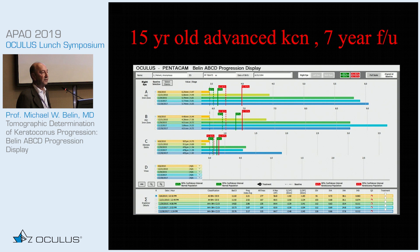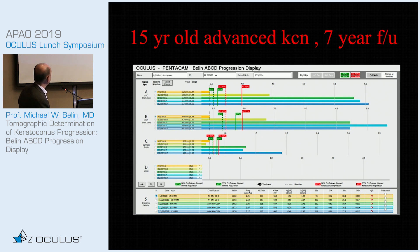Clinical application: here is a 15-year-old with advanced keratoconus and a seven-year follow-up. Over that seven-year period you can see marked continuous change — the anterior surface is progressing, the posterior surface continually progressed, and corneal thickness changed as well. The user left distance visual acuity empty here, as it is user-entered. There is statistically significant change visible on each parameter.